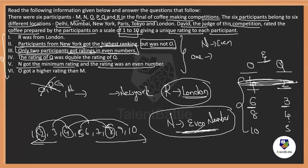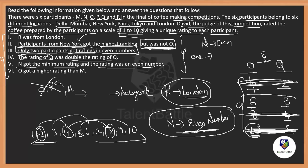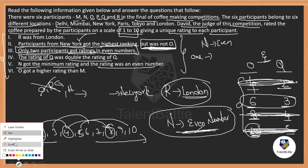For Q=3, O=6: three is odd and six is even — only one extra even, which works. For Q=4, O=8: both are even — again three participants would be even, so this is eliminated. For Q=5, O=10: O would have the highest ranking but the problem states O is not first, so this is also eliminated.